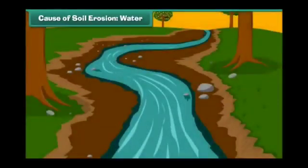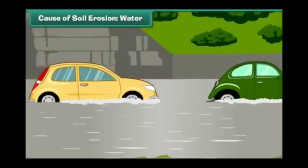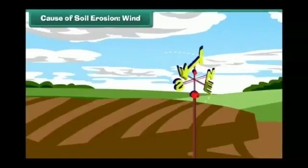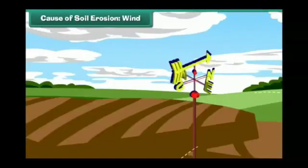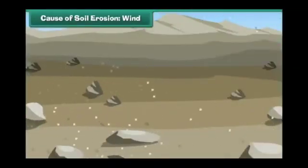Friends, come let us know the factors which cause soil erosion. The most common factors are water and wind movements. Water flowing through the ground carries away soil with it. During rain, the soil particles are detached by raindrops and are carried away by the running water. Floods are also a main cause behind soil erosion.